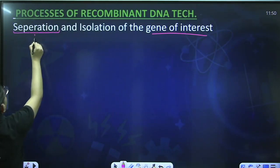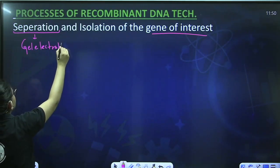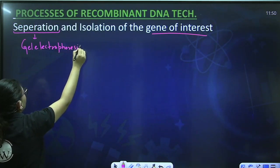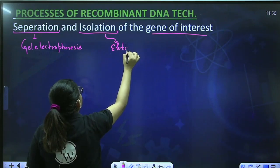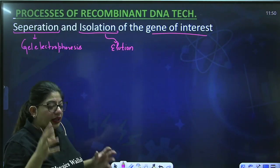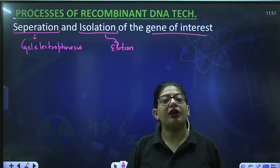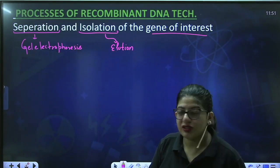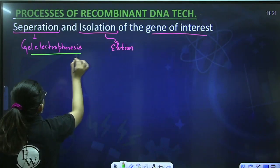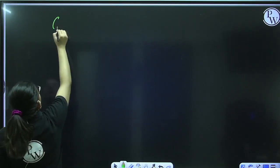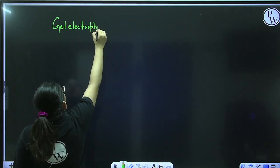For separation we have a technique known as gel electrophoresis, and for isolation we have a technique known as elution. These two techniques are required to take out your desired DNA or gene of interest from the different pieces of DNA. Let's first talk about gel electrophoresis.